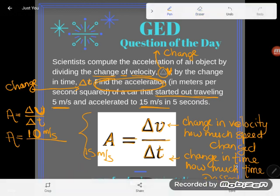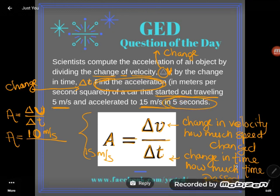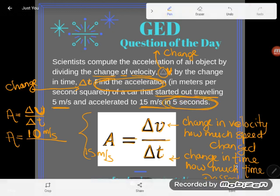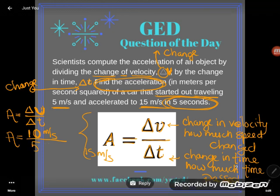I'm going to erase this work so I can have some room here. Now, the next thing I want is change in time, and that's just how much time passed. So if you look here, they tell me the change in time this time. They're very clear. They say that our car started out traveling 5 meters per second and accelerated to 15 meters per second, and they tell us exactly how long that took. They say in 5 seconds. So how much time passed while that car was accelerating? 5 seconds. So my 5 seconds will go down there.